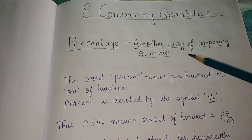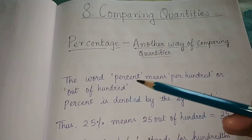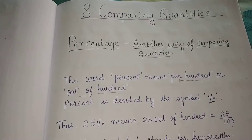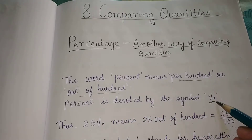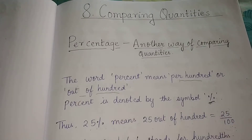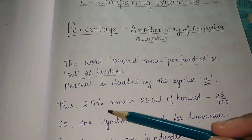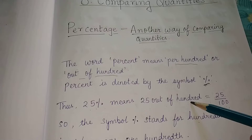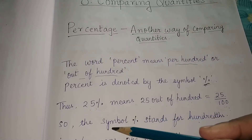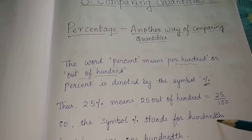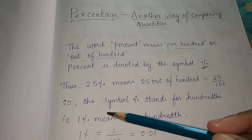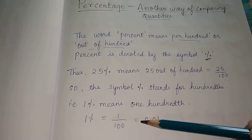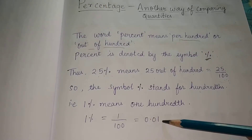Percentage is another way of comparing quantities. The word percent means per hundred or out of hundred. Percent is denoted by the percentage symbol. So 25% means 25 out of hundred, that is 25 by 100. The symbol percent stands for hundred. That is 1% means 1 by 100, or it can be written as 0.01 in decimal form.